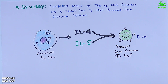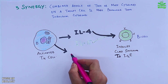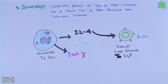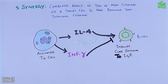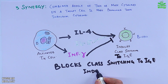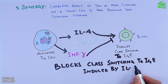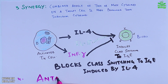On the other hand, the T helper cell can also secrete interferon-gamma, which antagonizes with interleukin-4 as shown in the diagram, thus blocking the class switching to IgE antibody induced by IL-4. This mechanism of antagonizing is termed antagonism by cytokines.